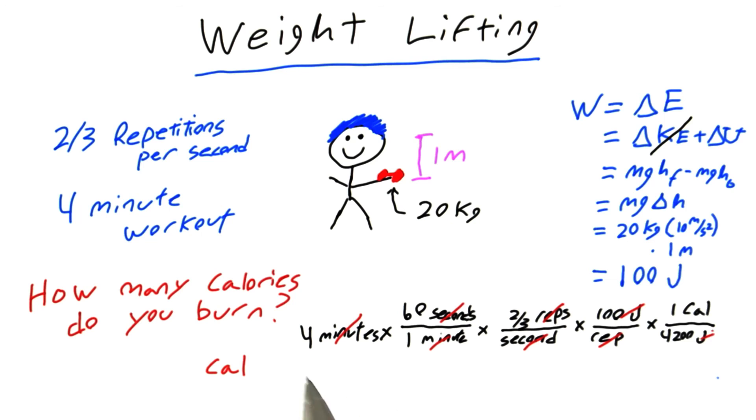Now let's multiply all these numbers together and we get that over the course of our four-minute workout, we burn 7.62 calories.